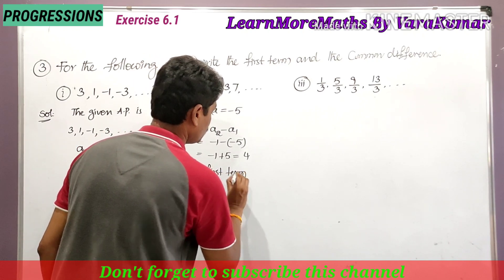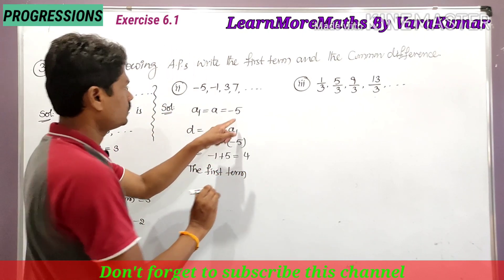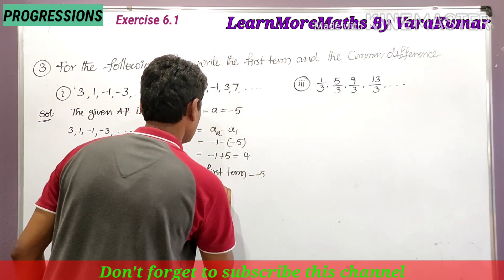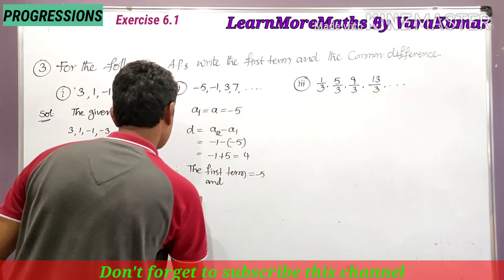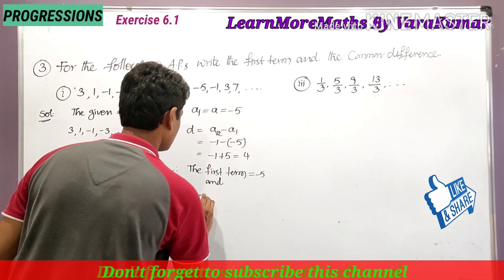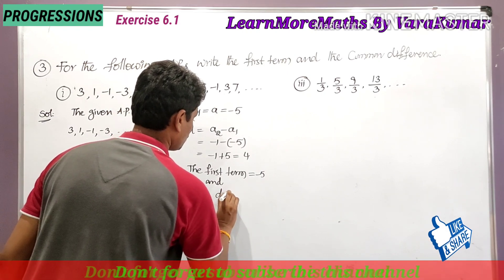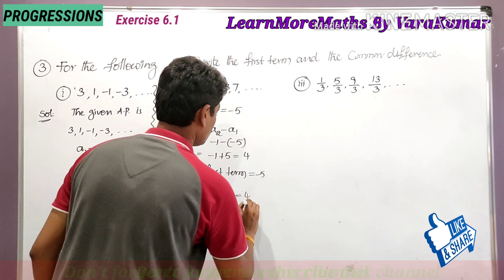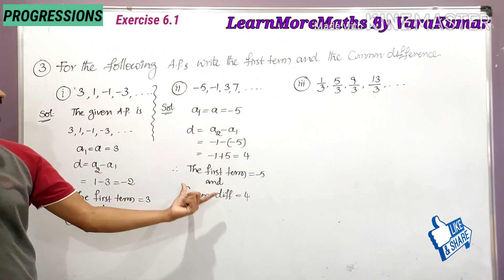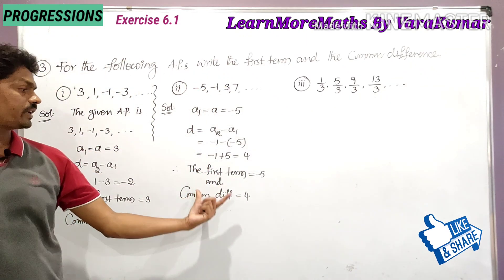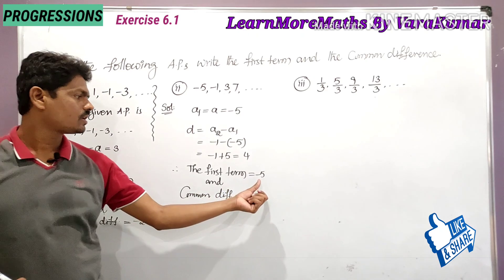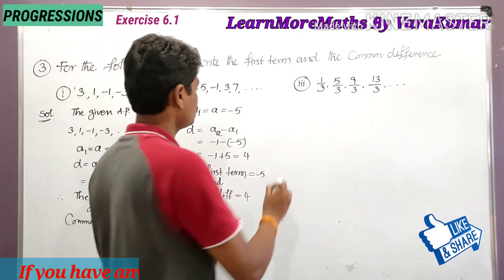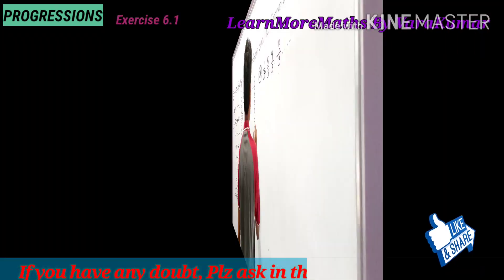Therefore, the first term is -5 and the common difference is equal to 4. So the first term is -5 and the common difference is 4. This completes the second part.